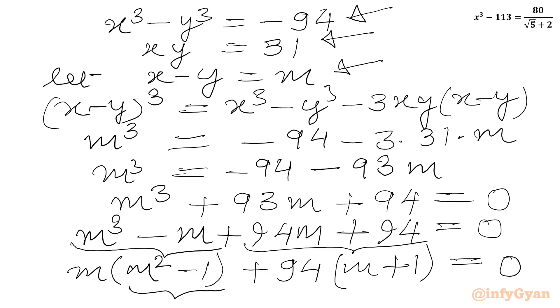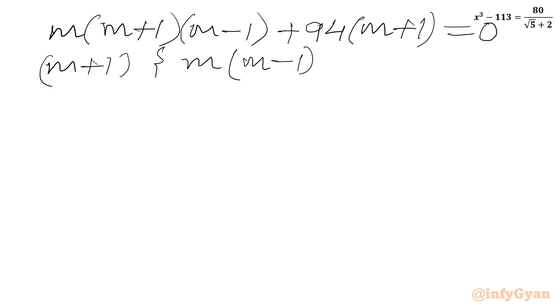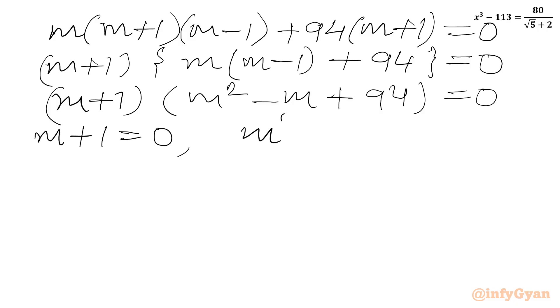Now m square minus 1 is m square minus 1 square which we can write m plus 1 times m minus 1 using difference of two squares formula. Let us write m times m plus 1 times m minus 1 plus 94 times m plus 1 equal to 0. Now m plus 1 is common. So in other bracket we will be writing m times m minus 1 plus 94 equal to 0. So from here we can conclude either m plus 1 will be 0 or m square minus m plus 94 will be equal to 0.